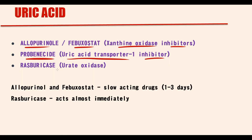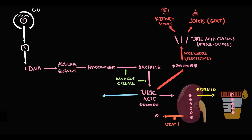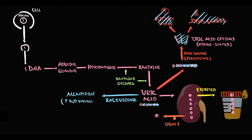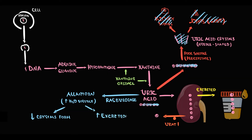We also have a drug called rasburicase, which is actually an enzyme called urate oxidase. Rasburicase provides oxidation of uric acid to allantoin. Allantoin is better than uric acid because it is a much more water-soluble molecule — the more soluble the molecule, the lesser the precipitation rate and the slower the rate of crystal formation, and also the more rapidly the kidneys can excrete it.